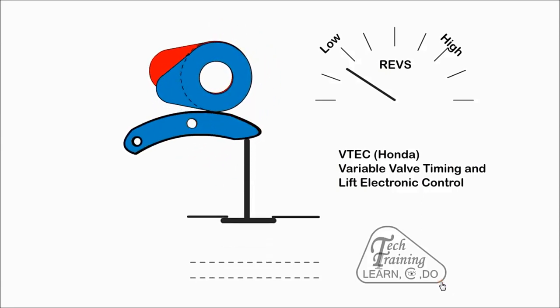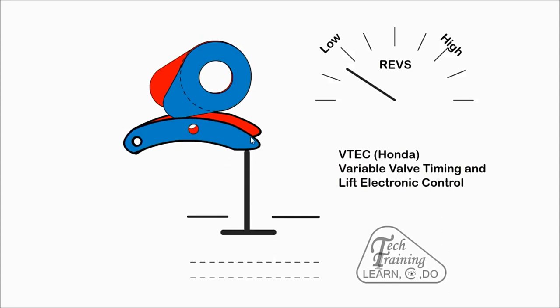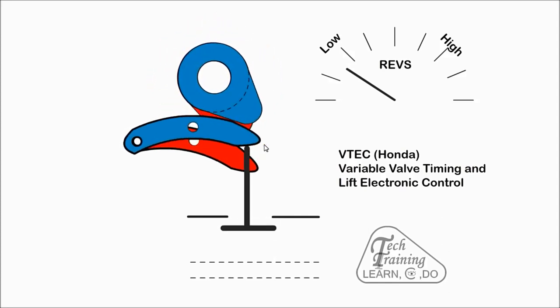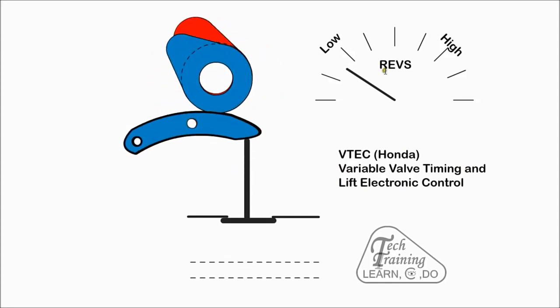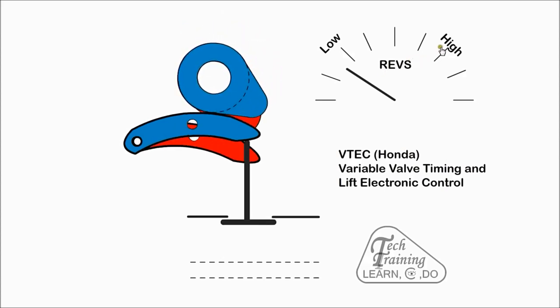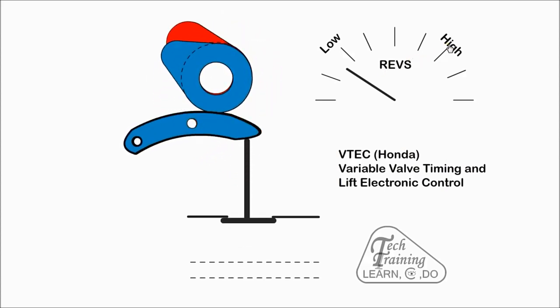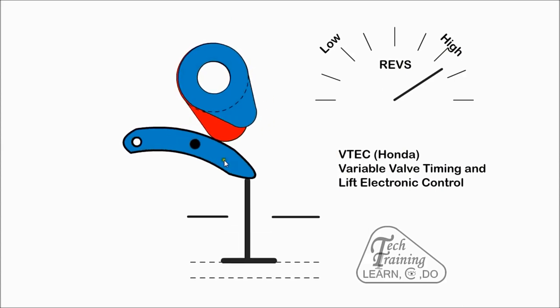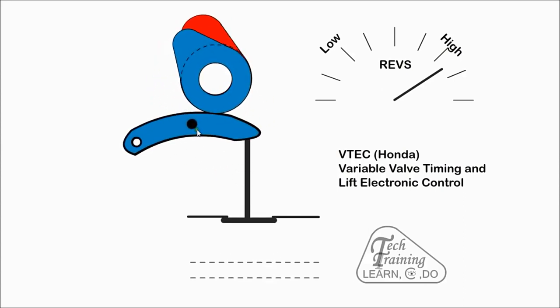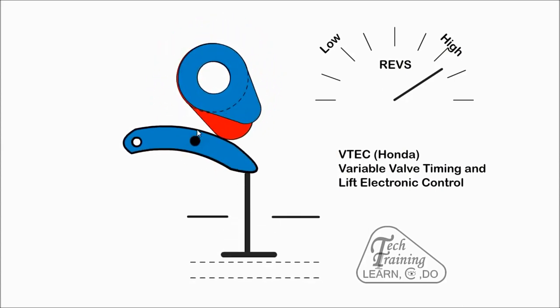With V-tech, the camshaft has two separate lobe profiles. The valve is in contact with the blue rocker arm. At low speed, cam operates on the standard profile for efficiency. At high speed, the pin is activated by oil and the rockers are joined together when they are aligned, thus altering the timing and lift for maximum power.